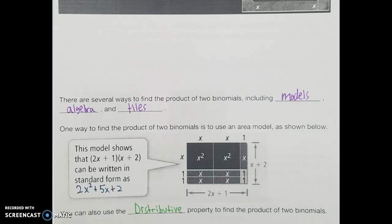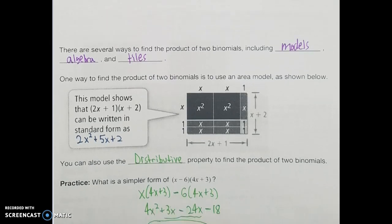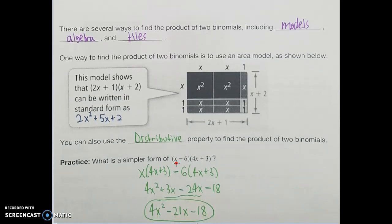We can also use the distributive property to find the product of two binomials. We don't use this as often, but if I'm trying to find the product of x minus 6 and 4x plus 3 in standard form, I can take the first term and multiply by that entire second part — x times 4x plus 3 — and also take the second term, minus 6, and multiply that by the second part as well. So distributing: x times 4x is 4x squared, x times 3 is 3x, and negative 6 times 4x is negative 24x, and negative 6 times 3 is negative 18.